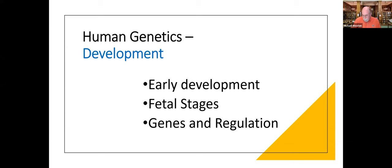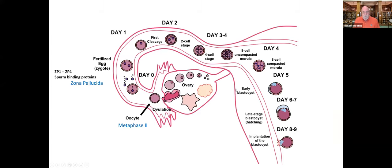Let's start with early development. Here we have a model of a human female reproductive system — we have a right and left side, with an ovarian area where meiosis occurs. We start life with a partial process of meiosis that is arrested until the oocytes are released from the ovaries.